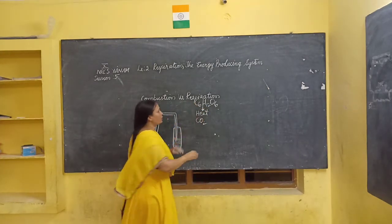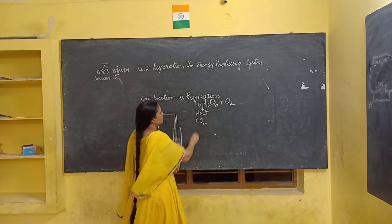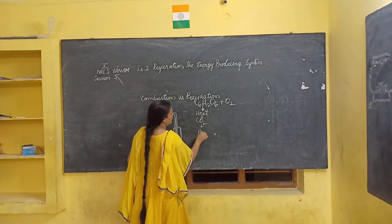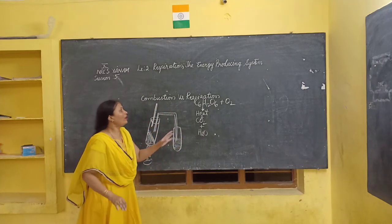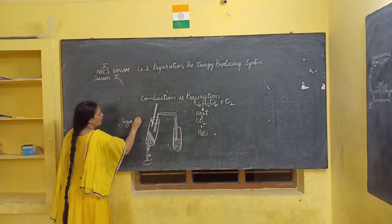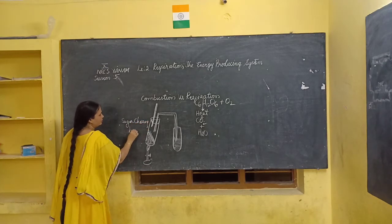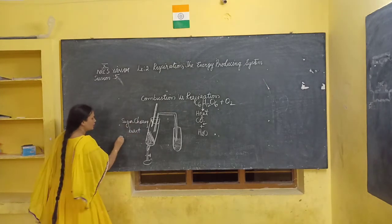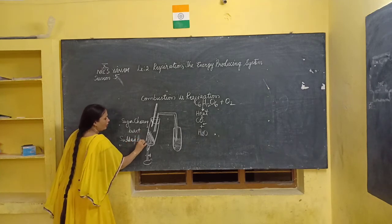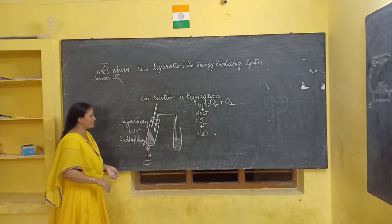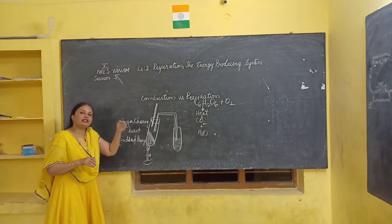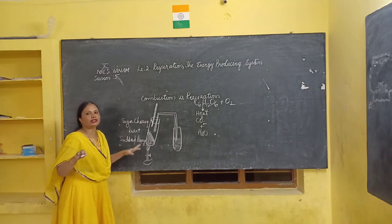In both situations — combustion and respiration — oxygen is used. In both situations, heat energy is produced. In both situations, carbon dioxide is produced. What is different? In combustion, sugars become charred and sudden heat energy is produced all at once. In our body, step by step energy is produced — no sugars are charred, our cells are not burnt, and energy is released slowly step by step.